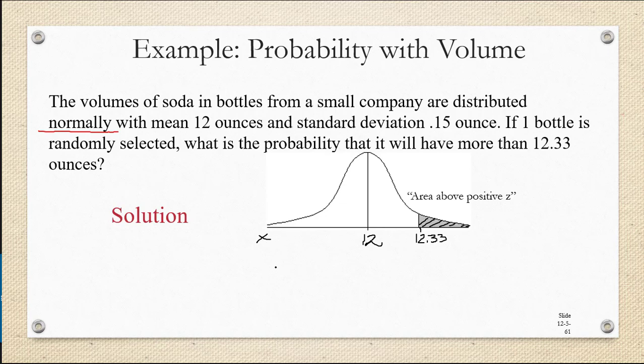These are all x values or data values. Underneath that, I'm going to draw another number line which shows the corresponding standard deviations, in other words, the z-scores. The z-score of the mean is always 0, but how can we find the z-score for a bottle that has 12.33 ounces?